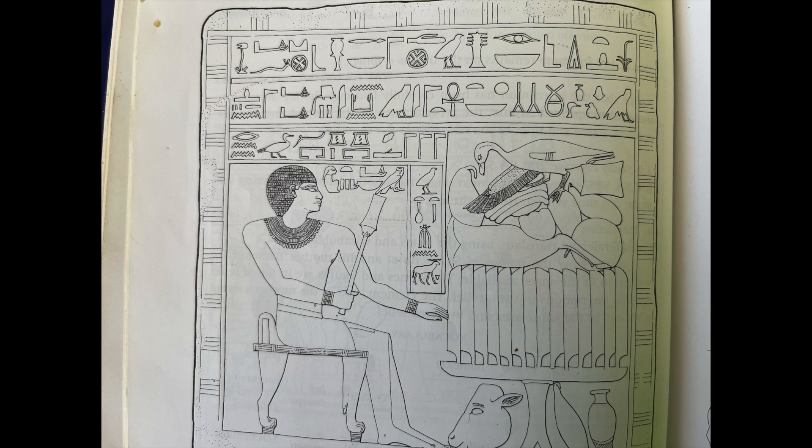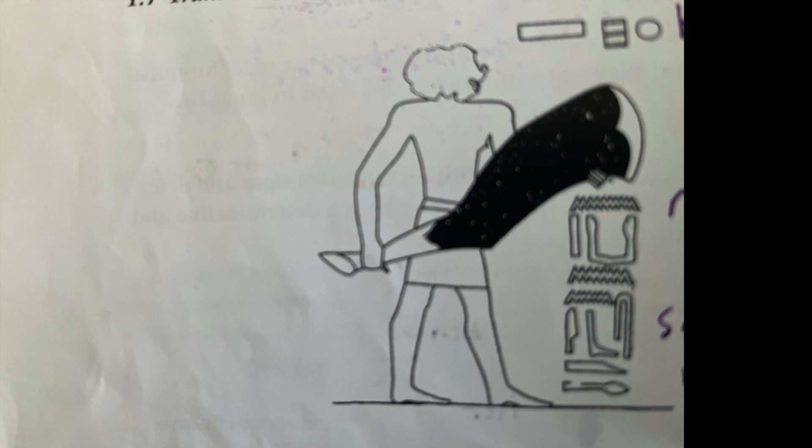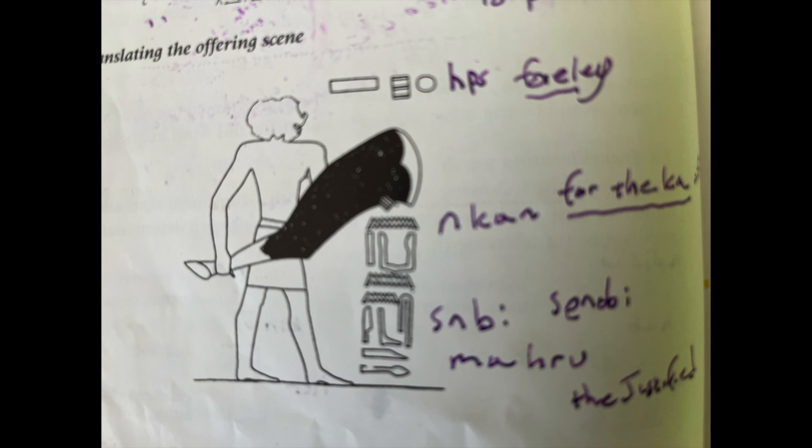Now other times a determinative can be actually part of the overall stela itself. It helps to know whose stela it is. But in this example, you can see this man holding a large cow leg is actually a determinative inside the sentence. The sentence is 'Hap-u-se-ni-ka-n sennobi maa-kheru', translated, but it incorporates that man into it.